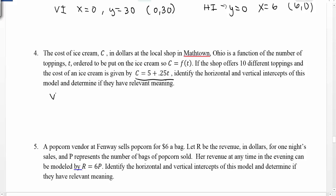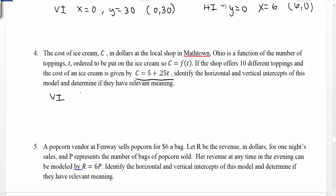For the vertical intercept, it's when the independent variable equals zero — here that's t equals zero. Plugging t equals zero into our function gives c equals 5 plus 0.25 times 0, which gives us $5. Now does that make sense? Toppings equals zero and cost equals $5 — that means if you get no toppings on your ice cream, it's still going to cost you $5 to buy that ice cream. So that makes perfect sense in this context.